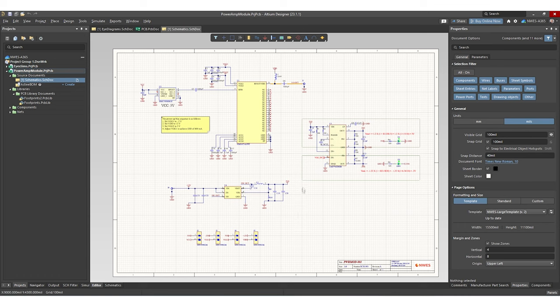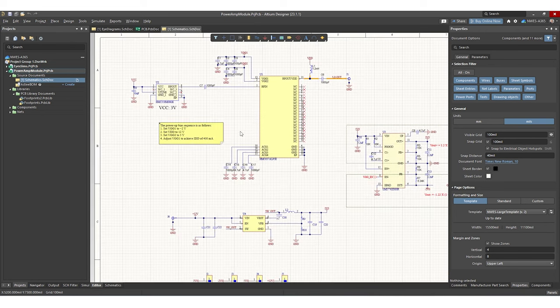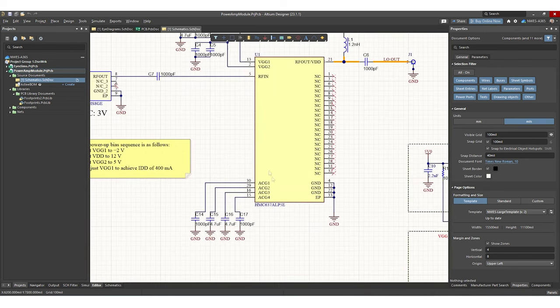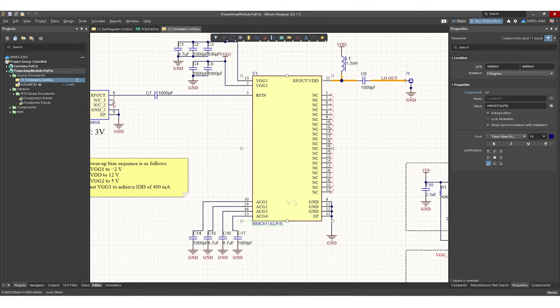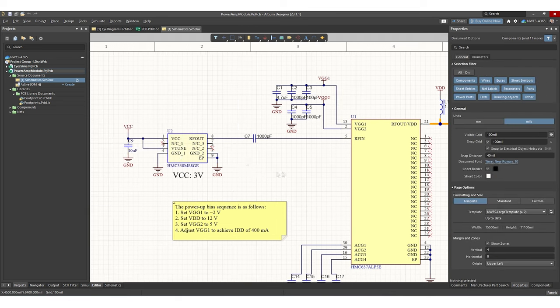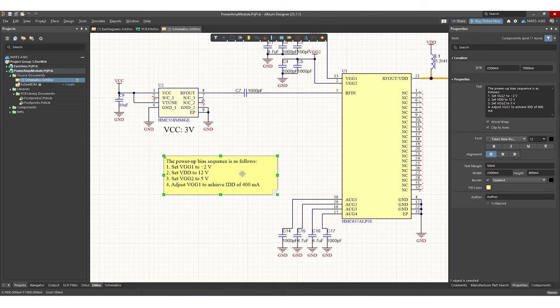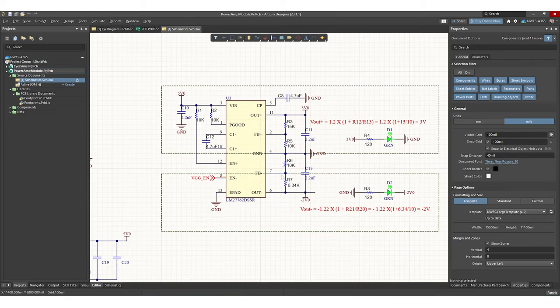So I jumped into Altium Designer to create a schematic for an upcoming project based on some of the components that we looked at. So the component that we looked at earlier in the video was the HMC-637 and you can see it right here. Here I've got my gate voltages and VDD hooked up and my input is coming from a VCO. Now the VCO has a fixed tuning voltage because I've hooked it directly up to this rail but you could modify this so that it's adjustable. One thing that's good to do in working with these components is just to leave a note here that includes the power up bias sequence.